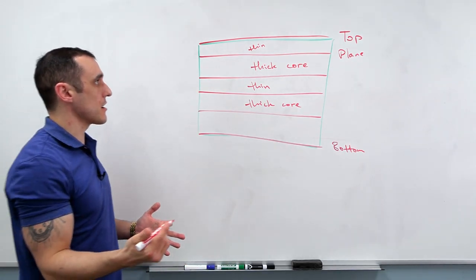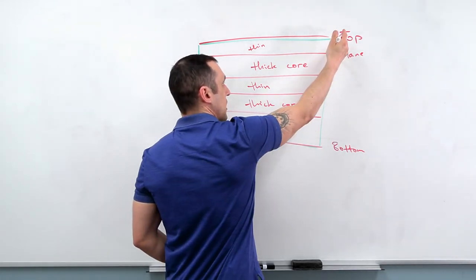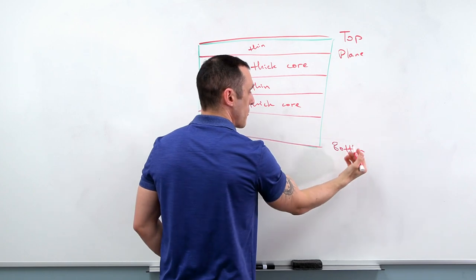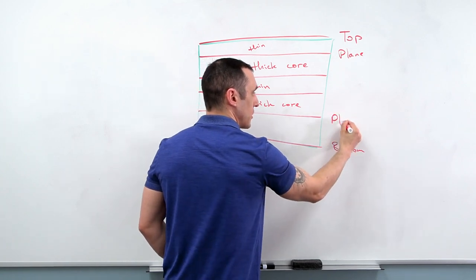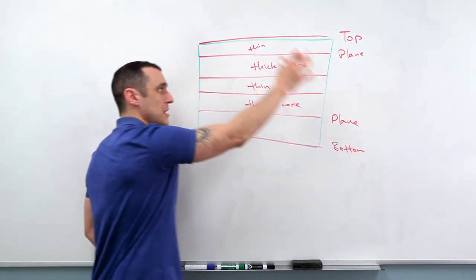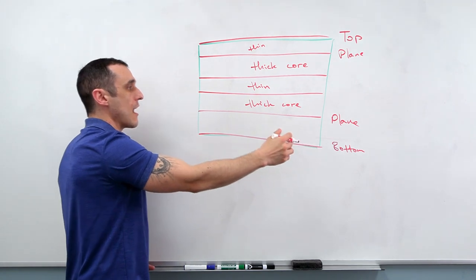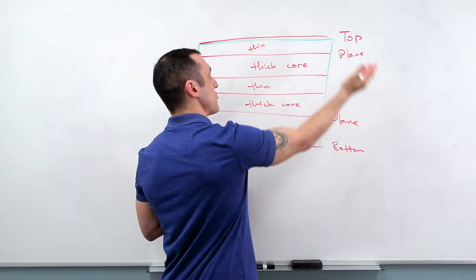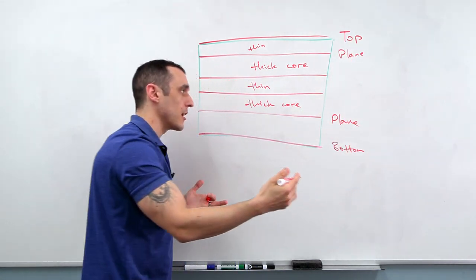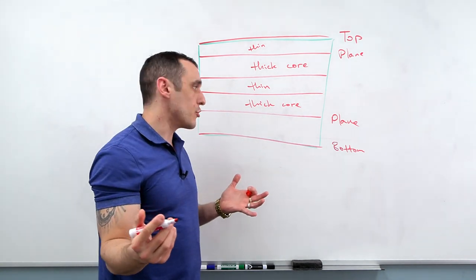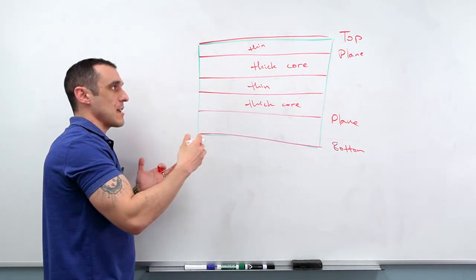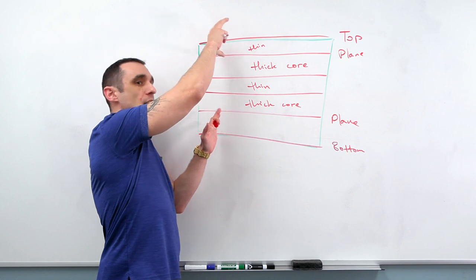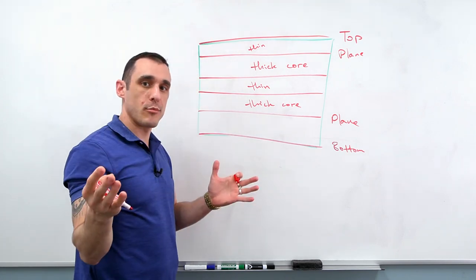Typically what we do with the six-layer stackup is we'll have a top layer, we'll have a plane, and then we'll have a bottom layer. And then we'll have a plane. And we'll keep things pretty symmetric here. Now, what are you doing with these planes? What are you putting on the top layer and the bottom layer? Well, it all depends what you need to do, but you can take kind of the same approach with these outer two layers that you would with a four-layer board.